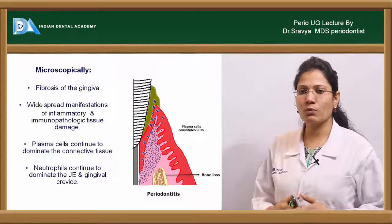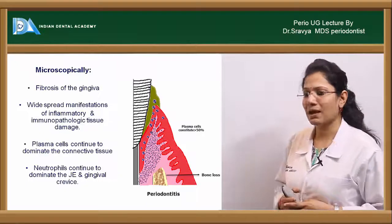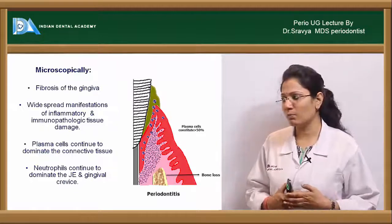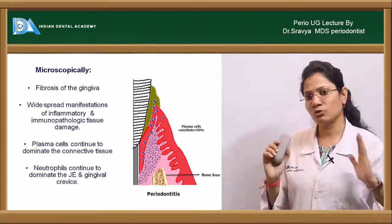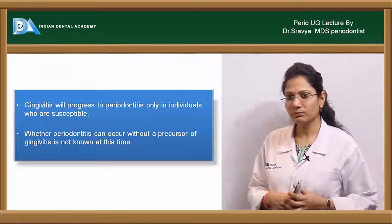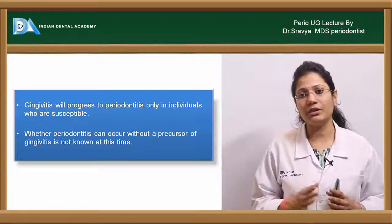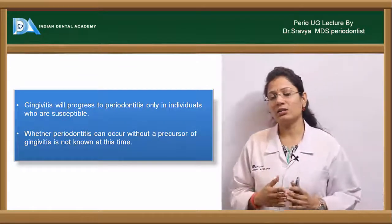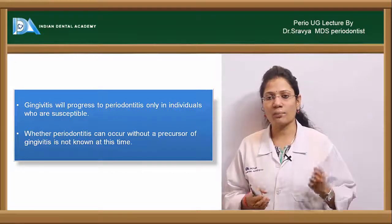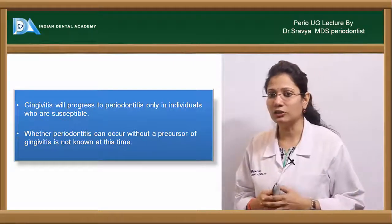Histologically in the advanced lesion, there is lots of fibrosis in the gingiva and widespread manifestations of inflammatory and immunopathological tissue damage. Plasma cells continue to dominate the connective tissue, and neutrophils continue to dominate the junctional epithelium and gingival crevice. Gingivitis will progress to periodontitis only in susceptible individuals — it is not that every individual will progress, and gingivitis can be stabilized at that stage.